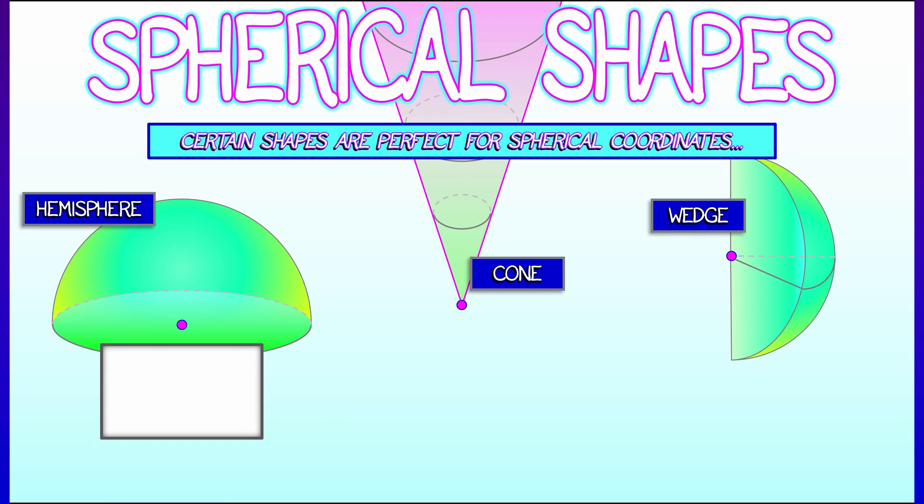For example, if you've got a hemisphere, let's say rho is going from 0 to some constant r. Then you would have theta sweeping around from 0 to 2π. And to get that upper hemisphere, you would have phi going from 0 to π/2, the equator.